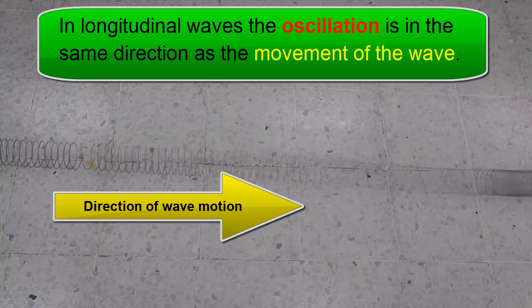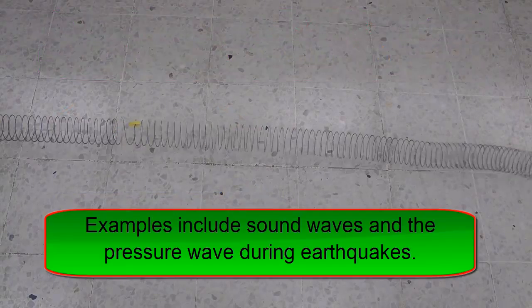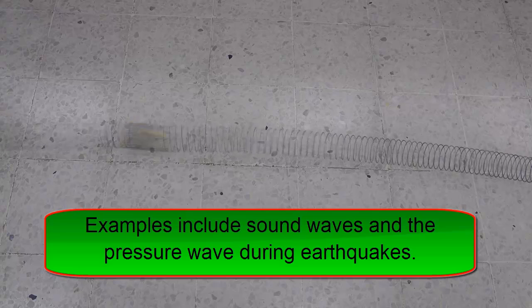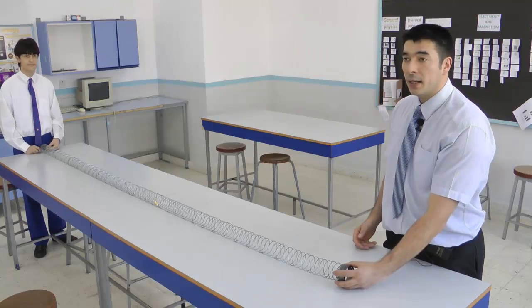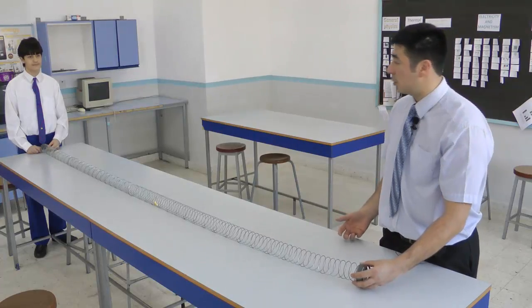A really good example of longitudinal waves are sound waves. For instance, my voice now. My vocal cords are vibrating backwards and forwards and slapping into the air, causing a compression wave to travel through the air. And now let's have a look at interference with longitudinal waves.